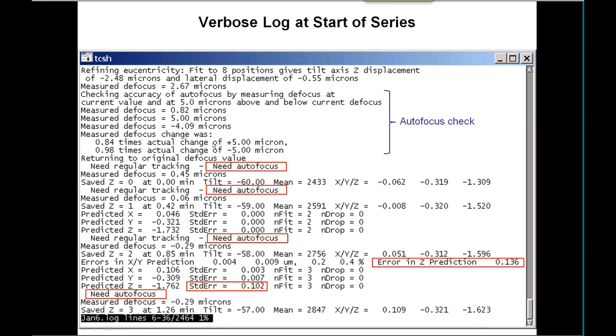I've highlighted what happens to the focus predictions and actions during this beginning of the tilt series. Obviously we start out needing both tracking and focus tracking. Here we start having our predictions, and we get to this tilt where it's able to tell us what the errors were on the previous predictions. As I said, here's the prediction in Z, and also the standard error in Z.